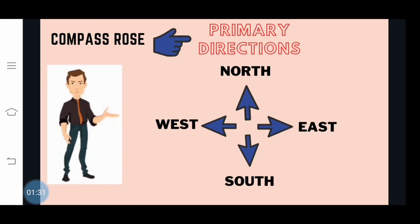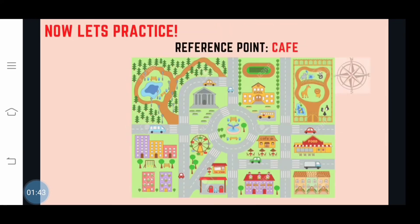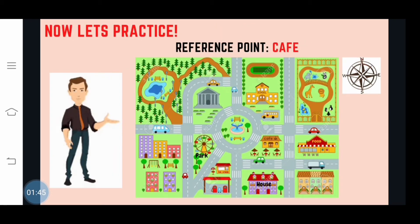The Compass Rose shows direction. First to know are the primary or cardinal directions: north, south, east, and west. Now let's practice using this community map as our example. Our reference point is the cafe. What structure or place is located at the north of the cafe? That's correct — it's the school. What structure or place is located at the south of the cafe?